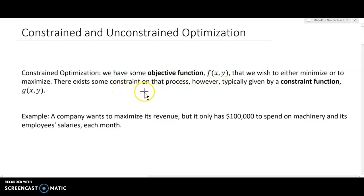However, there's going to be some sort of constraint on that process which will prevent us from just picking any point on that surface. It will typically be given as a constraint function g(x,y).